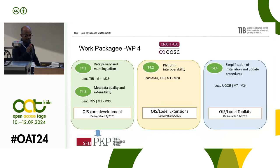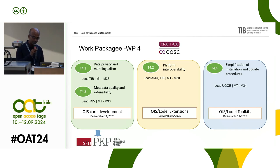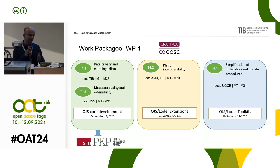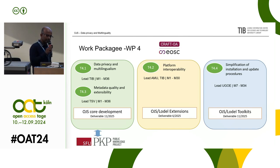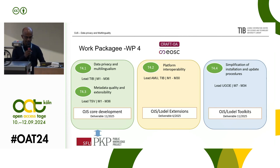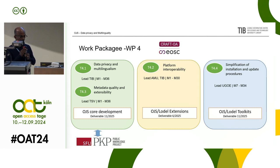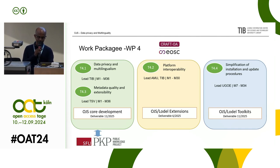In 2022 there was the CraftOA application, and TIP and TSV joined work package four, which is doing OJS core development — I think this is the only package doing OJS core development. This is only the second time in history that partners have done this kind of work; the only partners who have done it before are FU Berlin with their versioning. TIP is leading sub-task 4.1 on data privacy and multilinguality. Other features will be implemented during this project but will come in 3.6, not 3.5. PKP is heavily involved because they have to define a lot of things, and we have to change much of the infrastructure of OJS to do these developments.